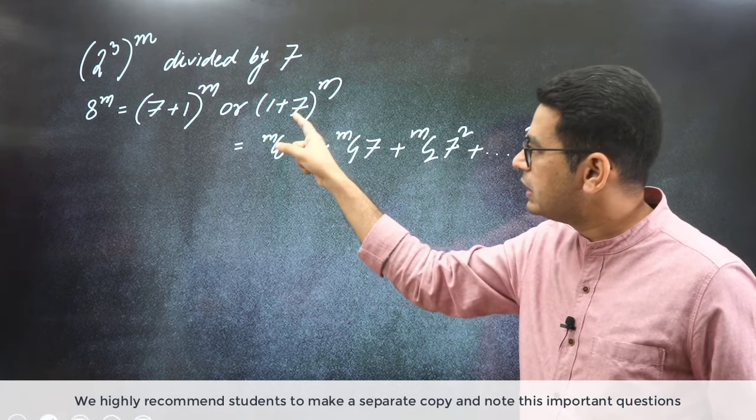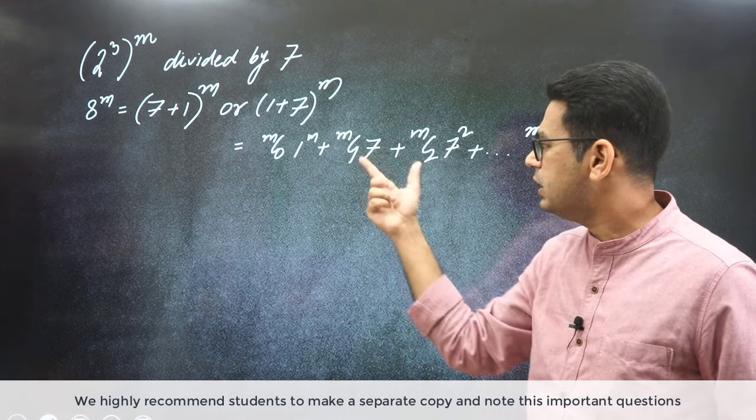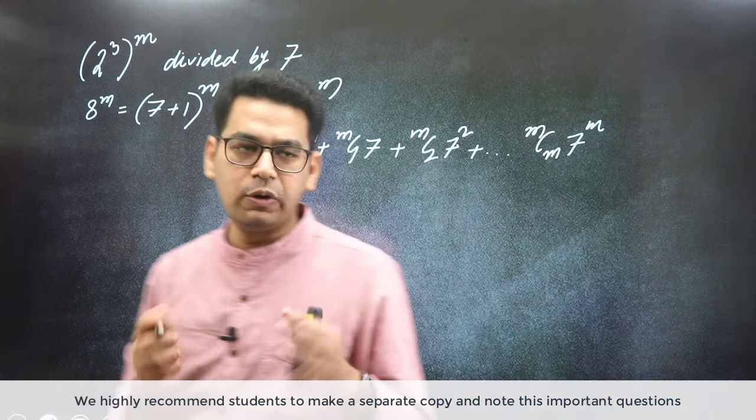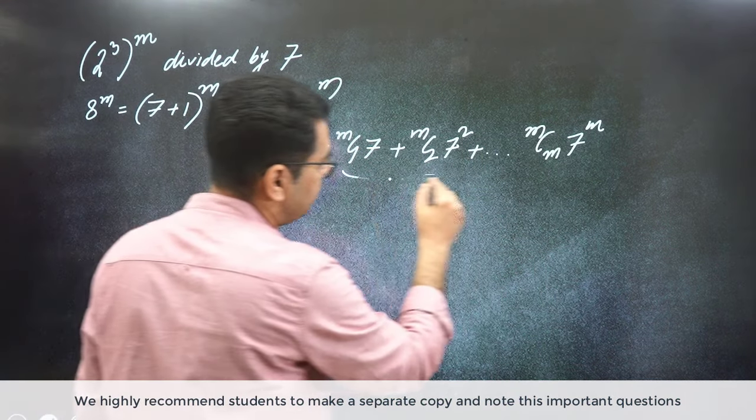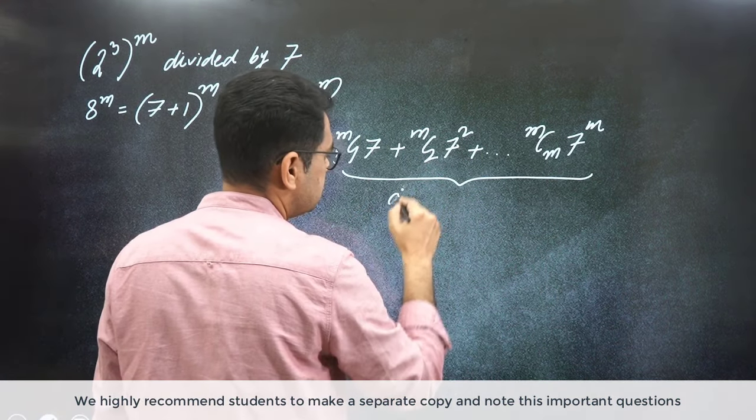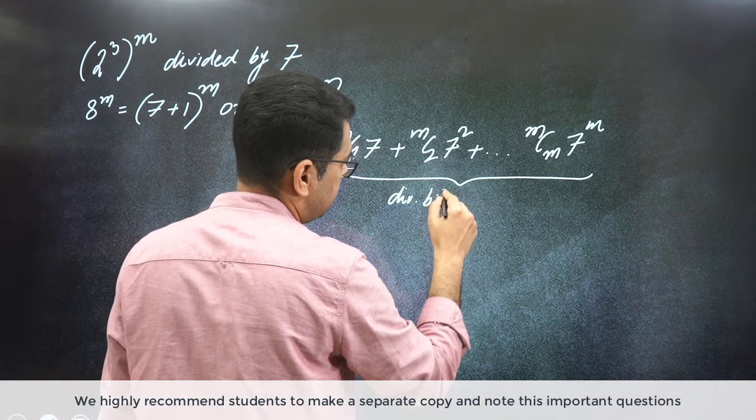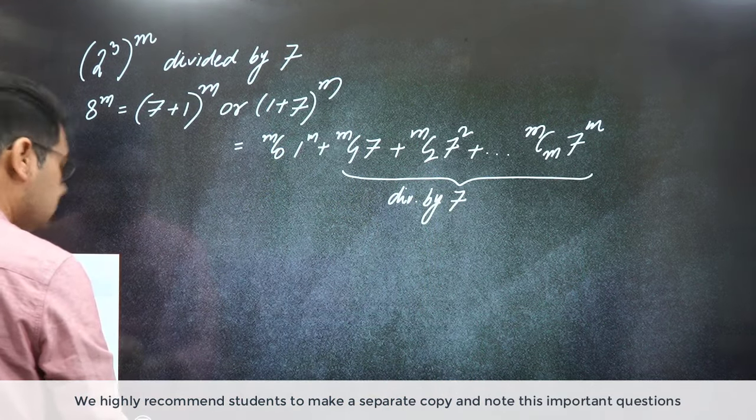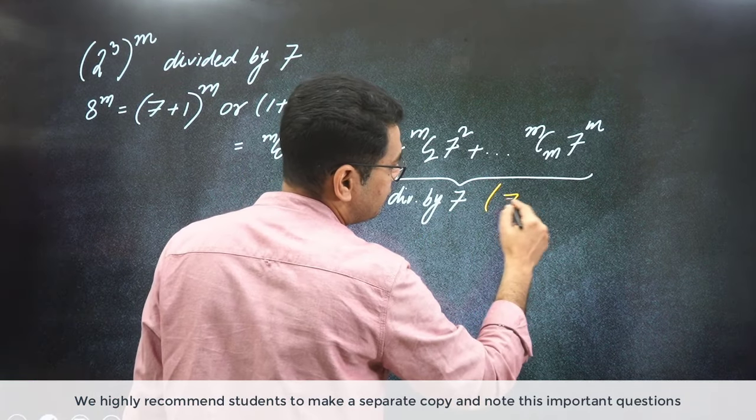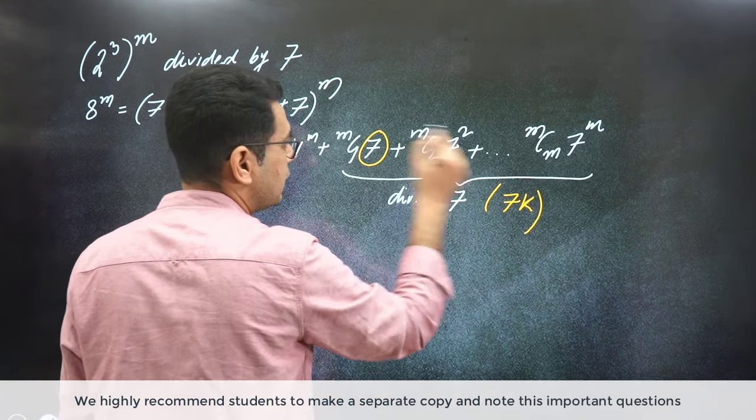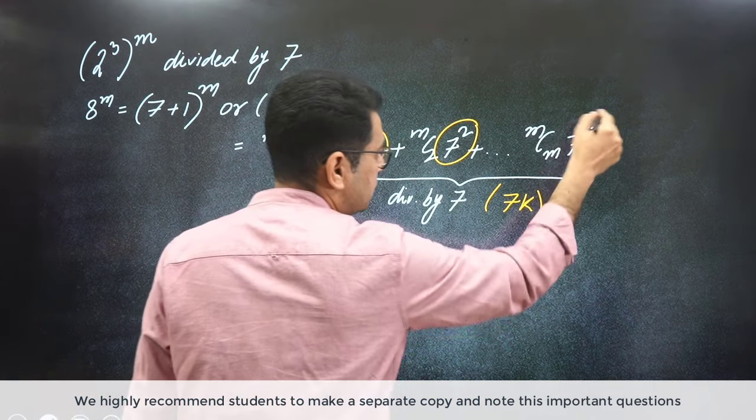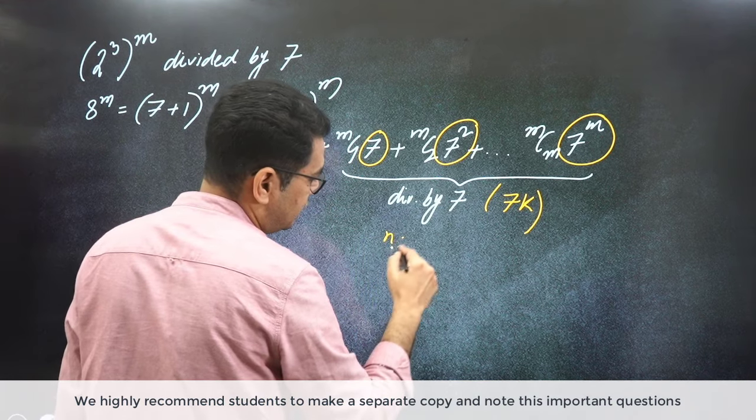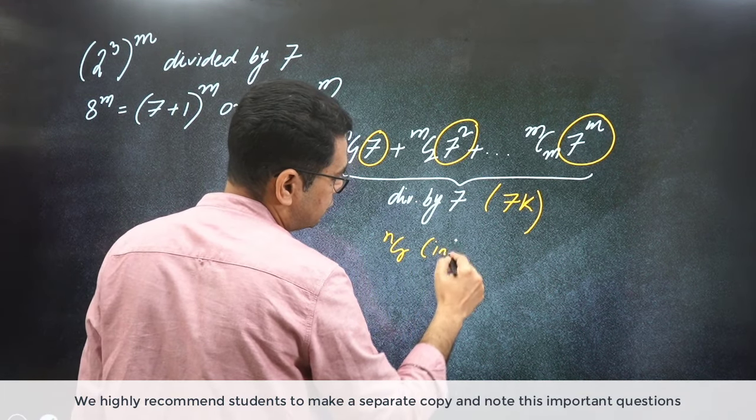If I write it like this, then what will happen first? mC0, 1. Then mC1, 7. mC2, 7 square. Yes sir. And this is also clear to everyone that this dismissed part is divisible by 7. Why? Because I can write this as 7k. Why 7k sir? Notice every term has 7. Every term has 7. And we already know this fundamental that nCr is always an integer quantity.